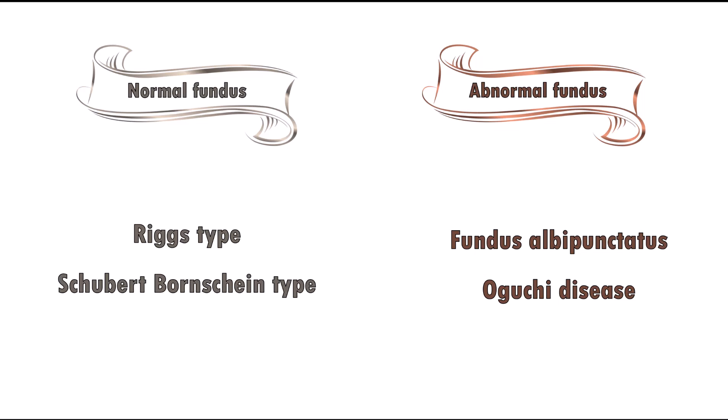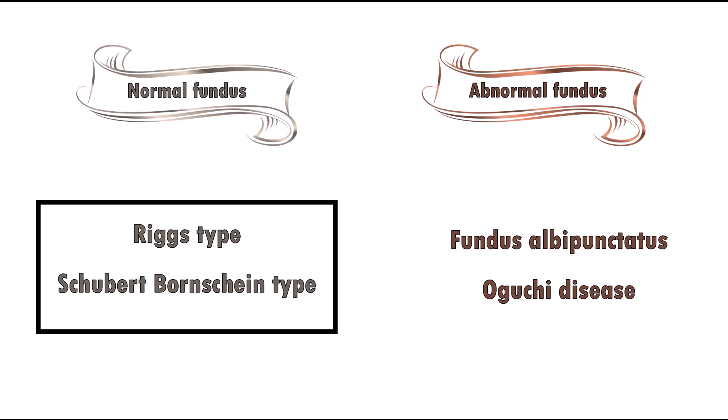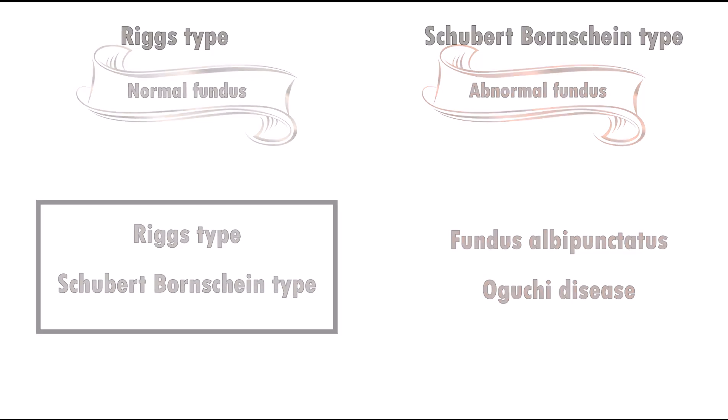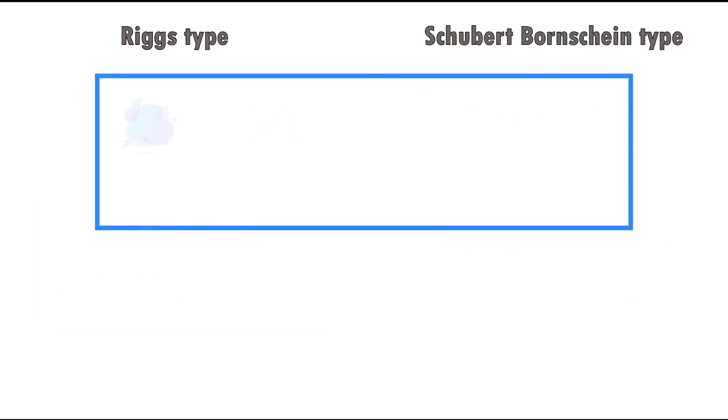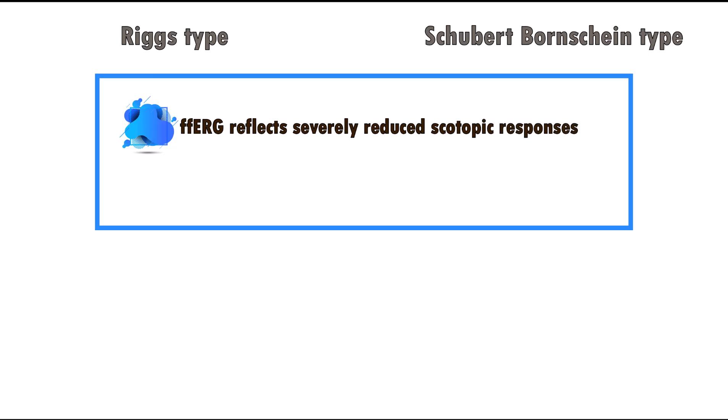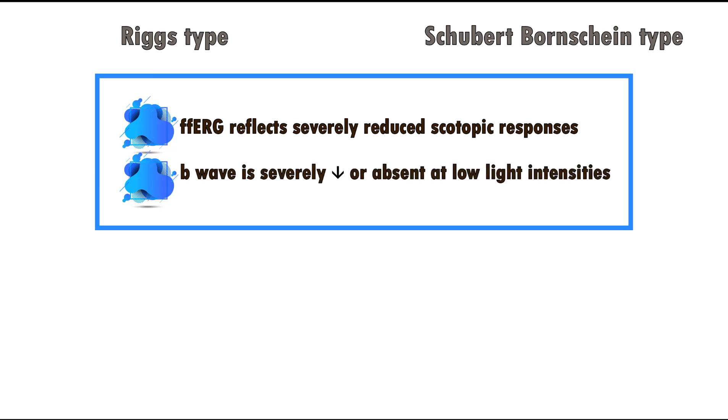Fundus albipunctatus and Oguchi disease are easily distinguished by their characteristic retinal features. The only way to differentiate these two is by an electroretinogram. In both of them, the full field ERG shows severely reduced scotopic responses with the B wave severely reduced or absent at low light intensities.